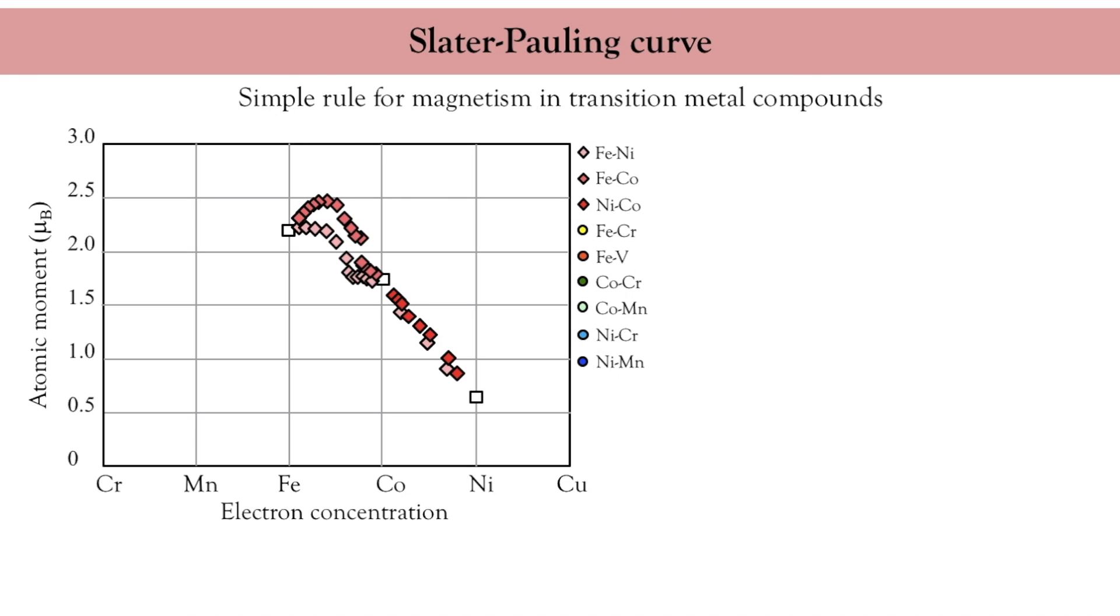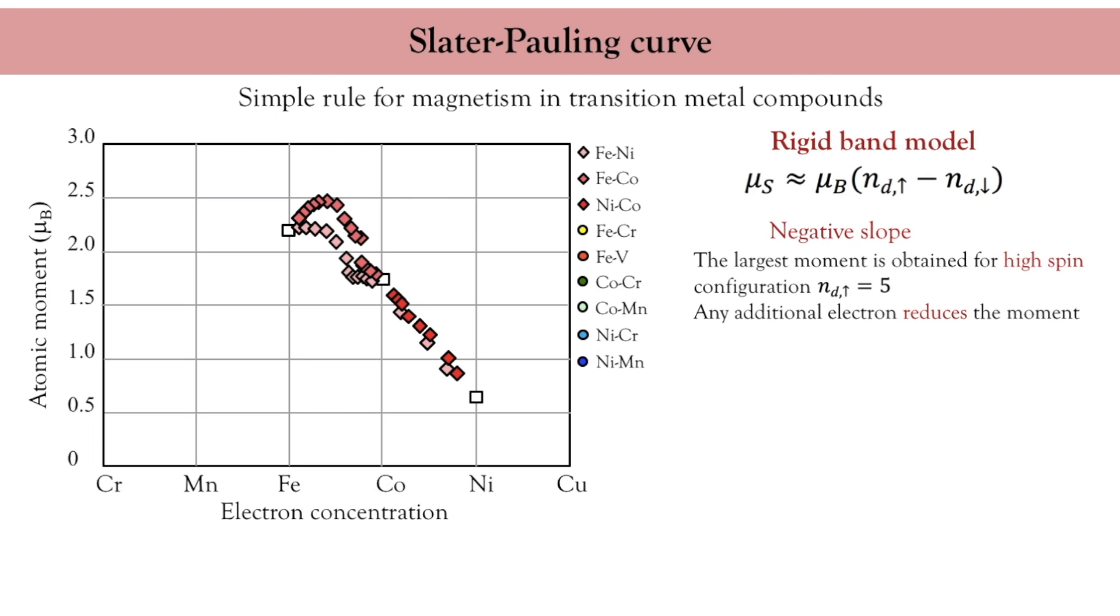So what it seems is that what really matters is the number of valence electrons. To understand this, we can adopt the so-called rigid band model, which simply counts the number of electrons per band, up and down, without worrying about anything else. The largest magnetic moment I can get is a high spin configuration where all five electrons are up. Any additional electron must be down and then reduce the magnetic moment. So if I do that, I find that the magnetic moment decreases with the number of valence electrons.